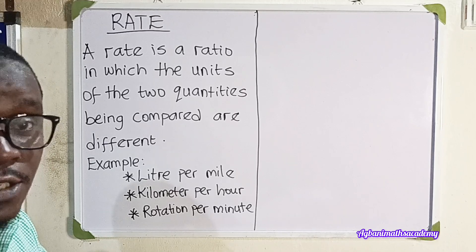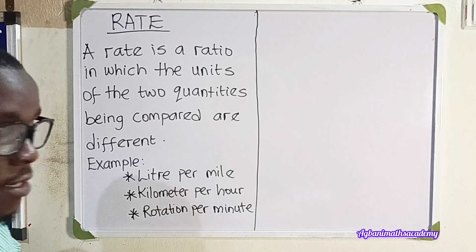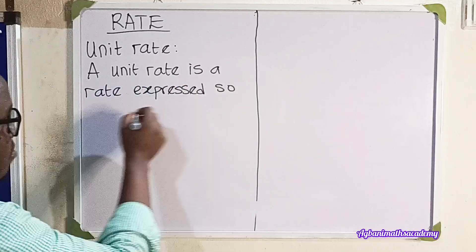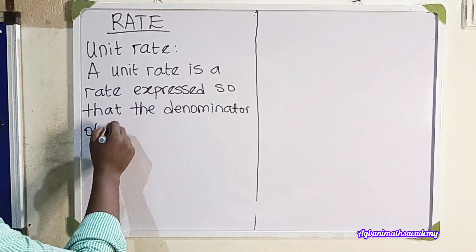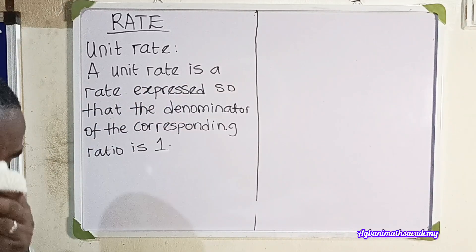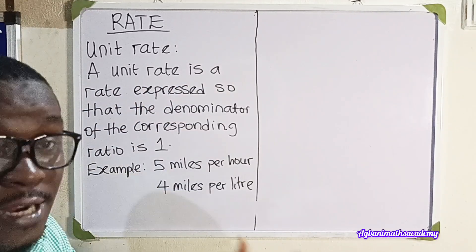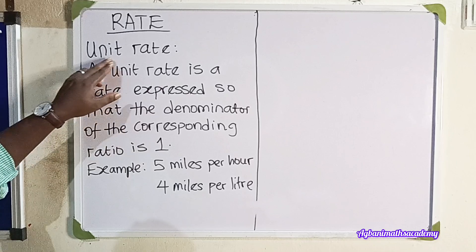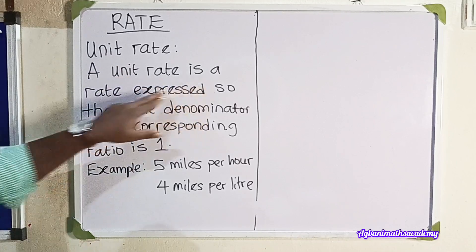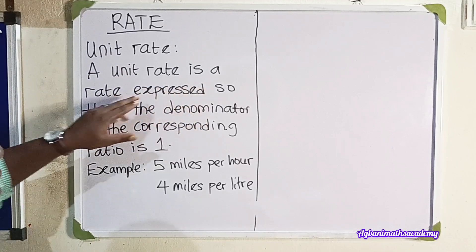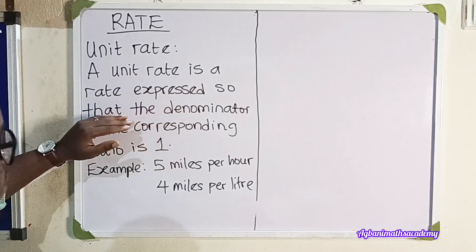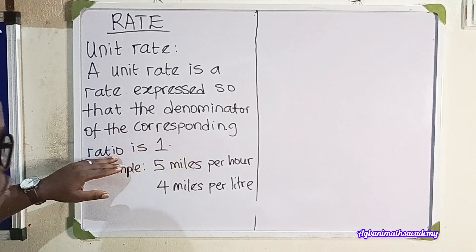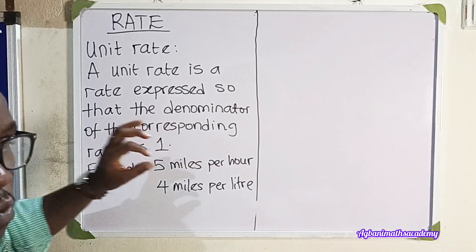Next, we'll be looking at unit rate. A unit rate is a rate expressed so that the denominator of the corresponding ratio is 1.